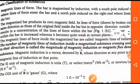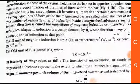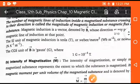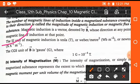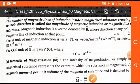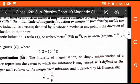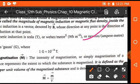The SI unit of magnetic induction is Tesla. Weber per meter square is also a unit, and another unit is Newton per ampere meter. The CGS unit is Gauss. One Gauss is equal to 10 to the power minus 4 Tesla.